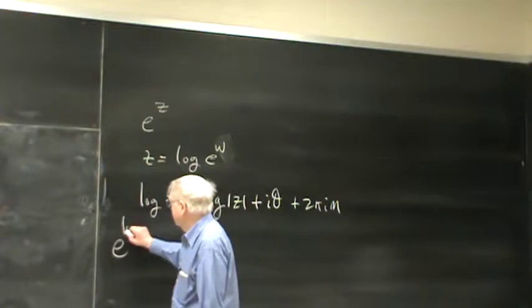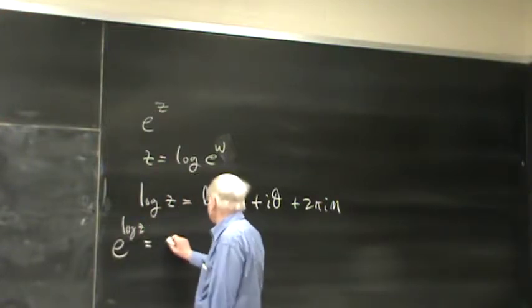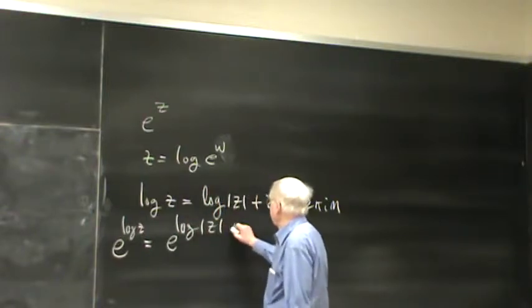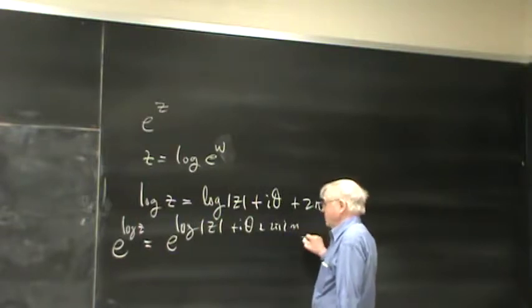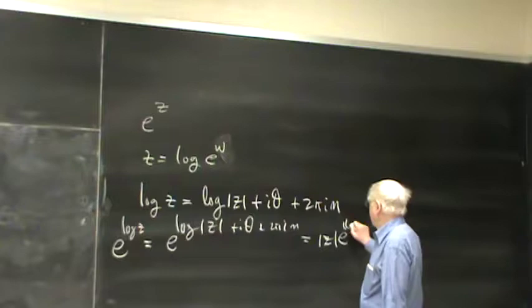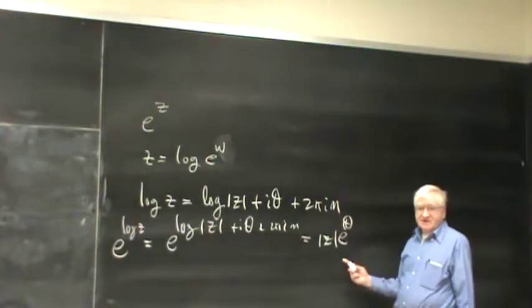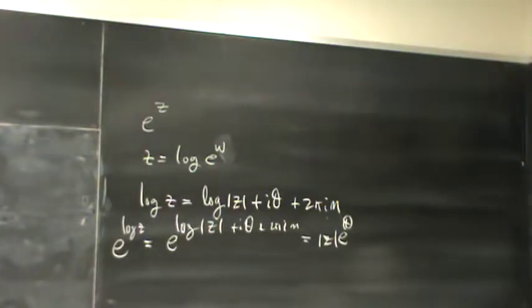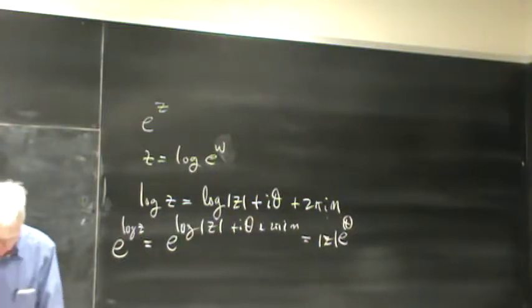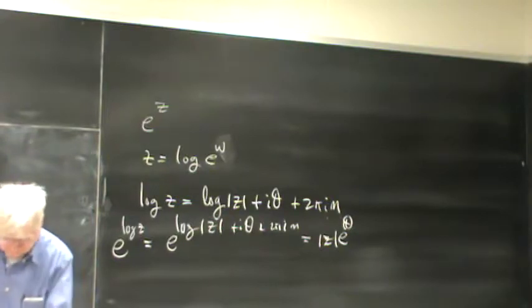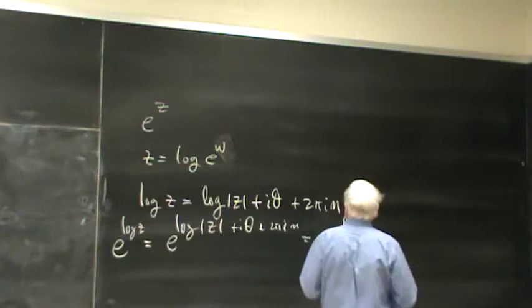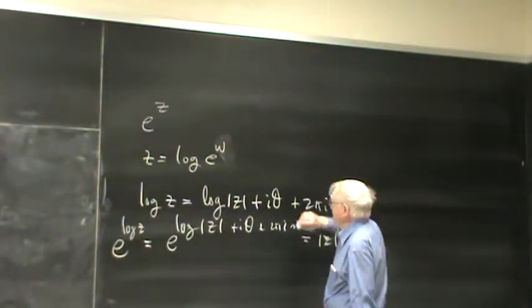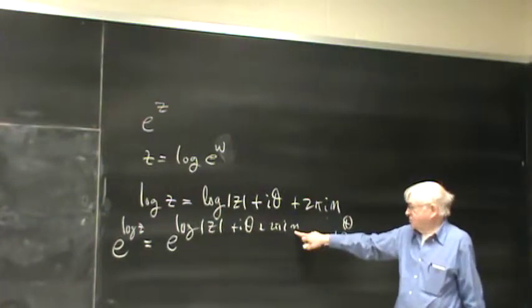That's because e to the log z will be e to the log|z| plus i theta plus 2πn, which is just |z| e to the iθ, and no matter what n is, we get the same answer. So there's this ambiguity in the log, and the exponential function is so fundamental in mathematics that all the powers and roots are defined in terms of it. This ambiguity propagates into all sorts of other functions. The question is: what do we choose for this n?